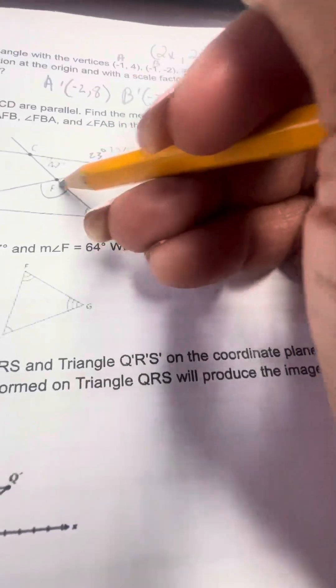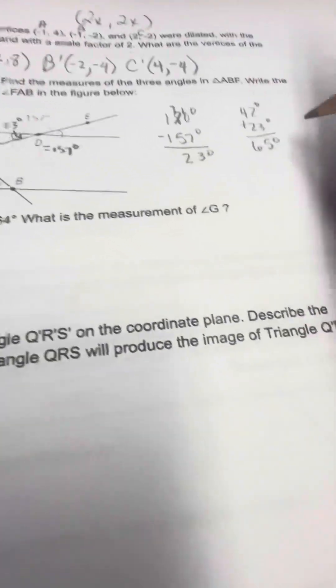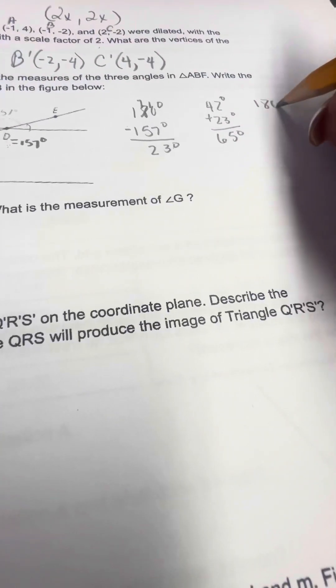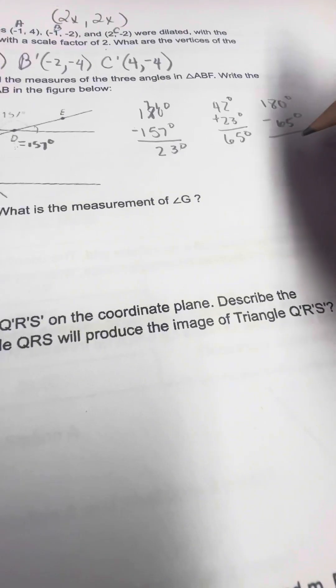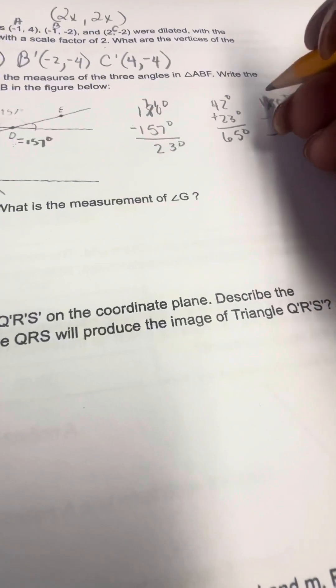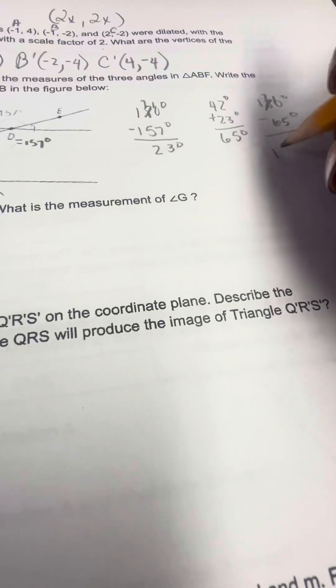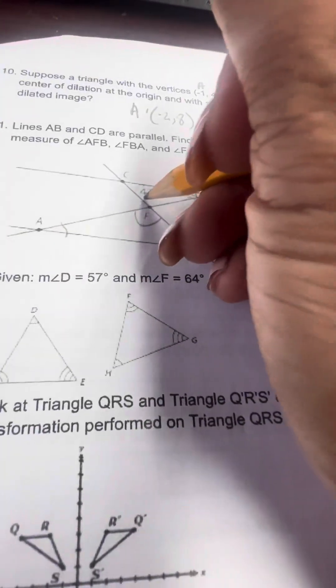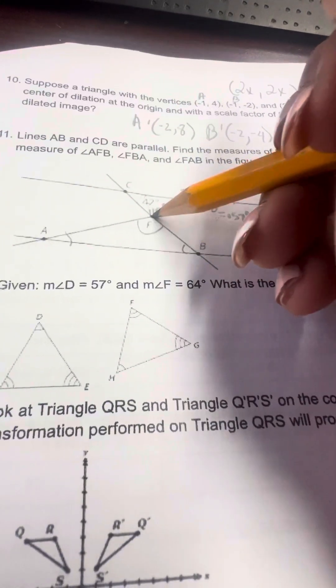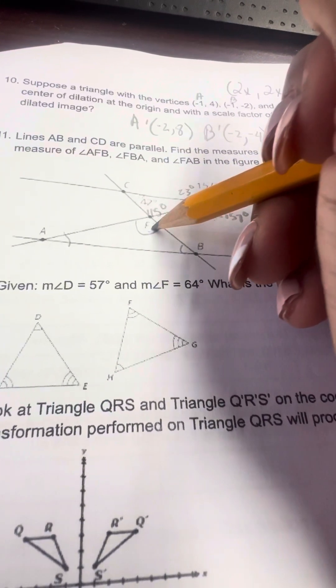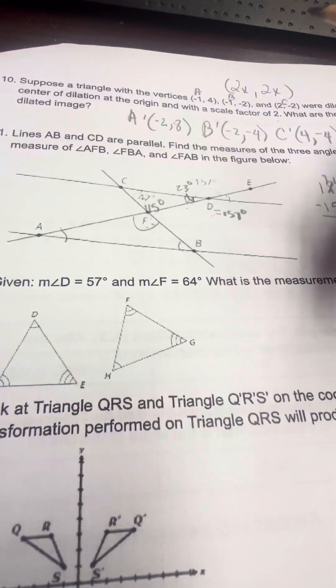The interior angle measures of a triangle equal 180. So if I subtract 180 degrees minus 65 degrees, I get 115 degrees. So therefore, this measure is 115 degrees. Because both of these angles are vertical, the measure of angle F is 115 degrees.